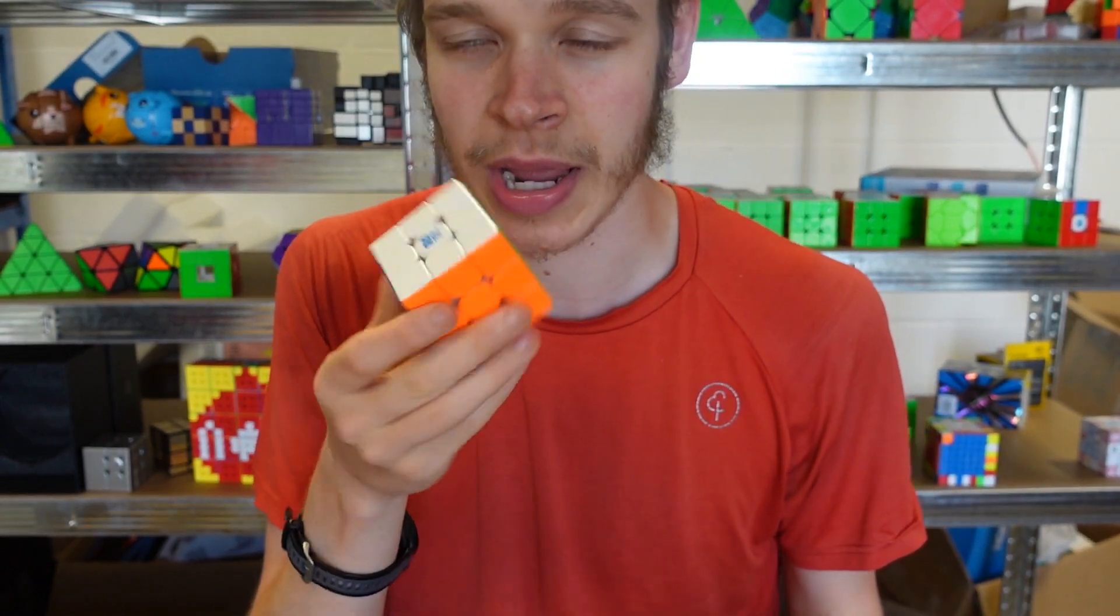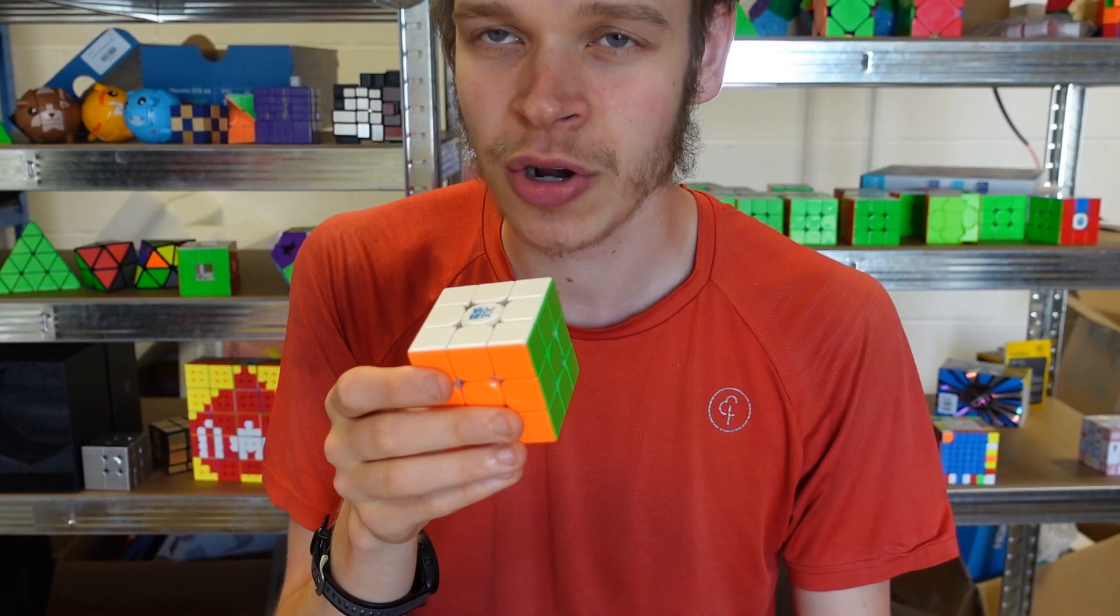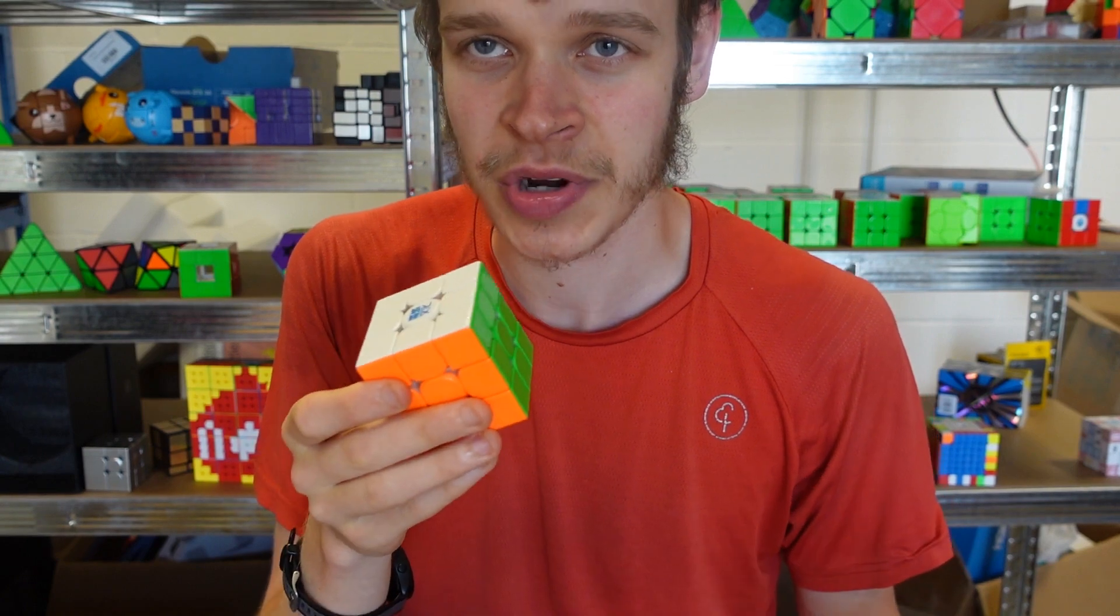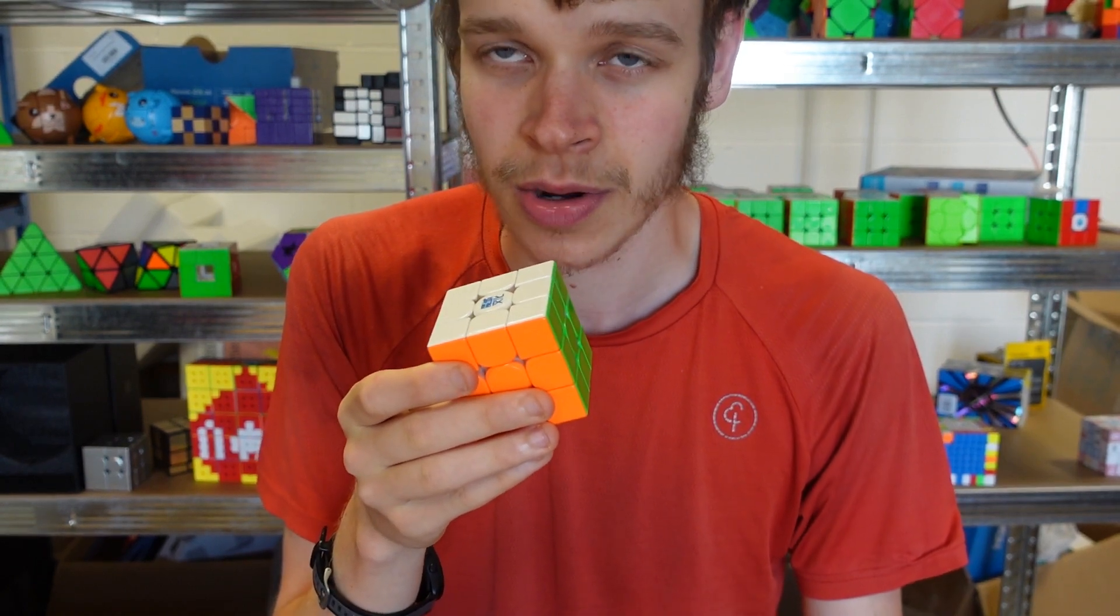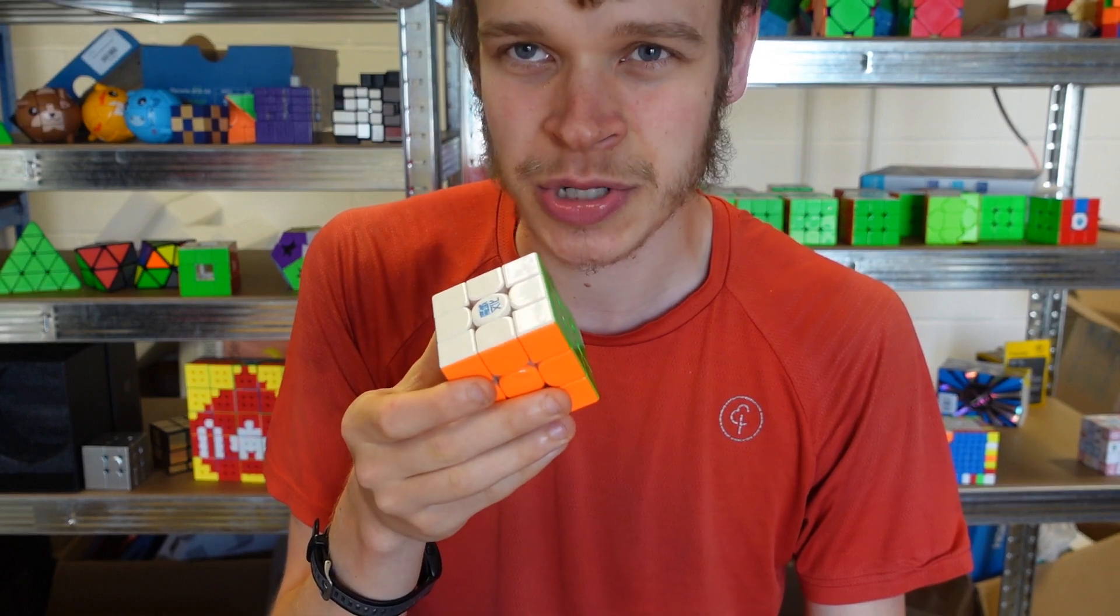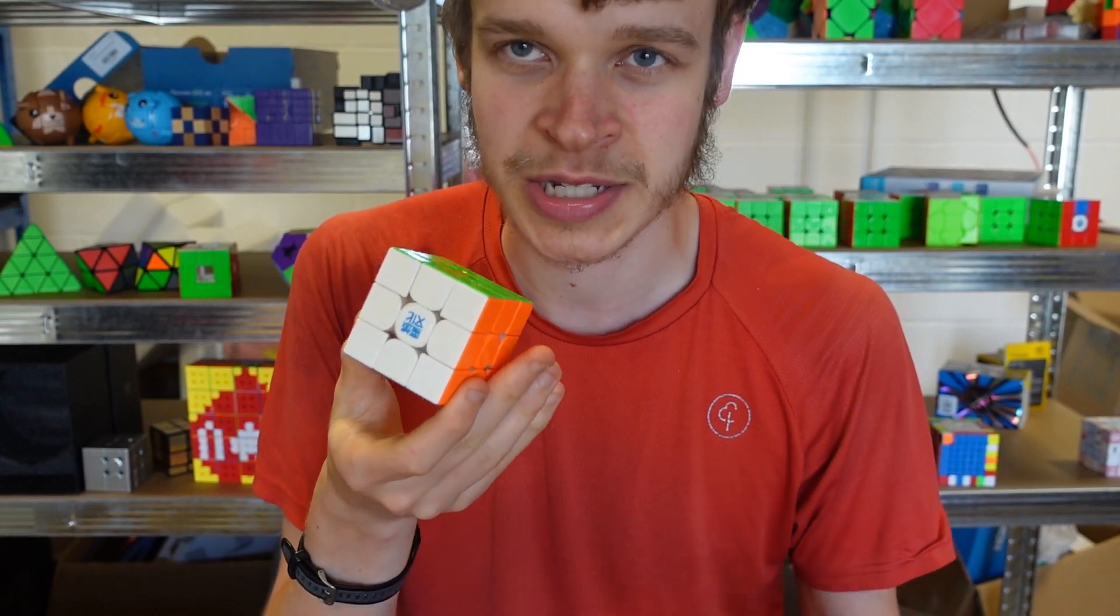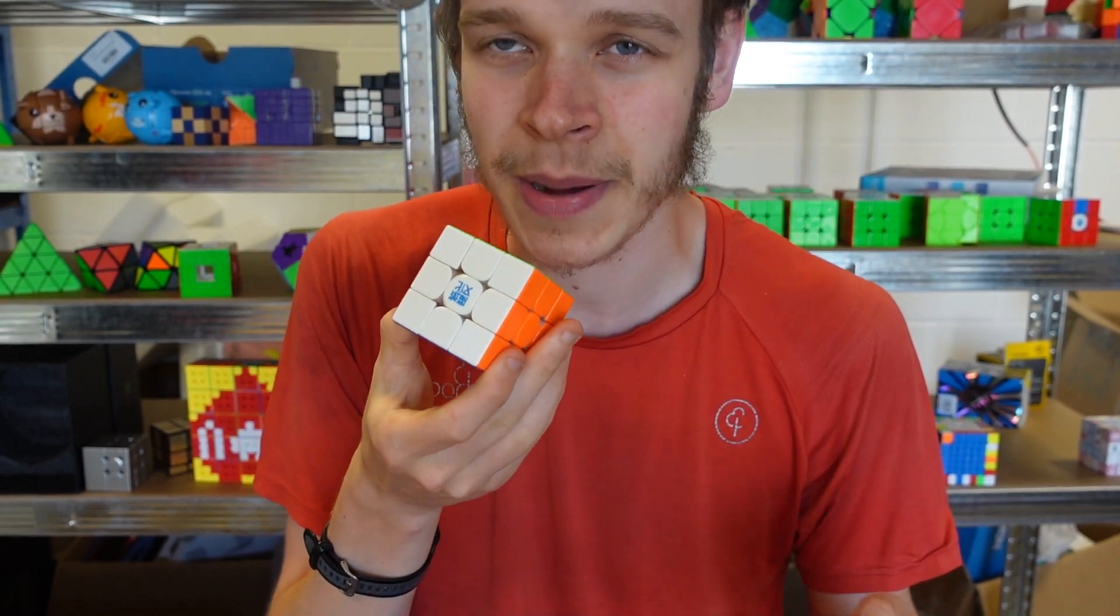You can get loads of different cubes at speedcubing.org. They ship directly from Peterborough in the UK and they do ship all around the world. If you want to get a cube you can buy it directly from me at speedcubing.org. But let's get back to how Zhuang Yiheng did that scramble in 4.66 seconds.